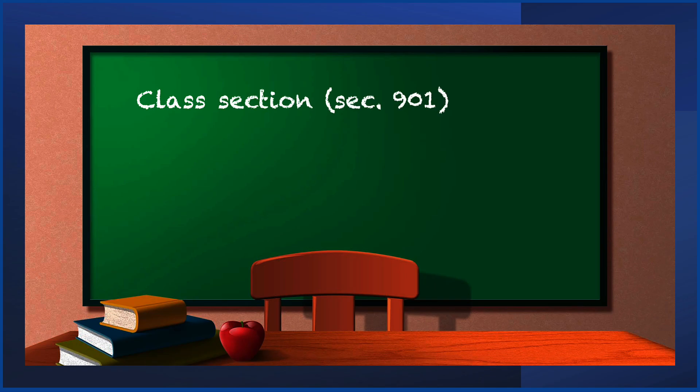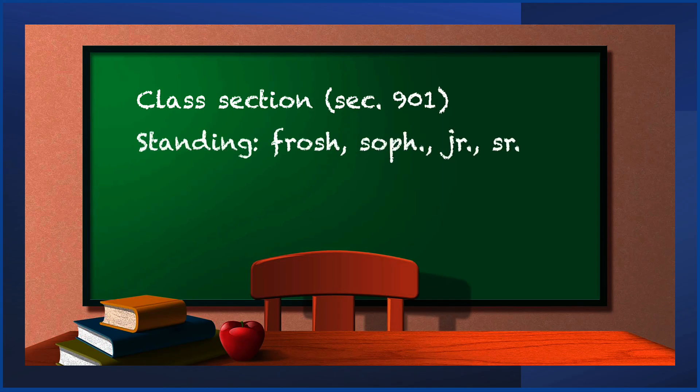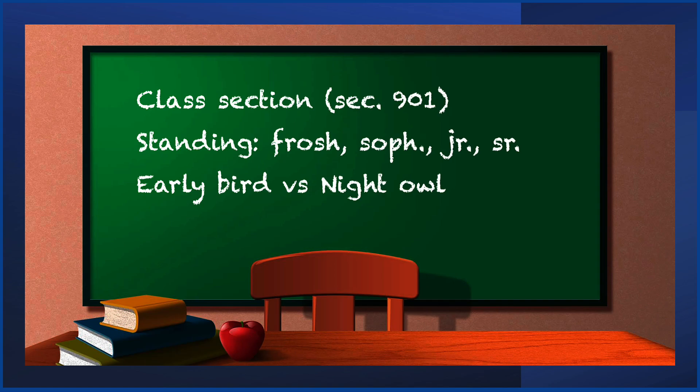Let's apply what we've learned. A nominal level variable example: your class section, such as section 901 — that number stands in as a name. An ordinal variable: your class standing — are you a freshman, sophomore, junior, or senior? Other categorical variables: are you an early bird or a night owl? And what is your vaccination status — have you had one shot, two or more, been fully vaccinated, had your booster, or are you unvaccinated?